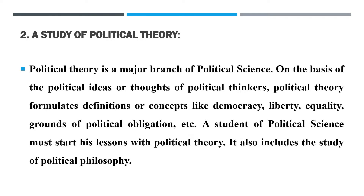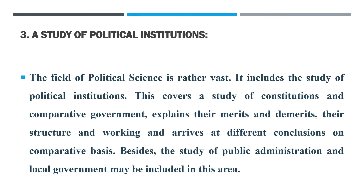Next we have the study of political institutions. The field of political science is rather vast. It includes the study of political institutions, which covers a study of constitutions and comparative government, explains their merits and demerits, their structure and working, and arrives at different conclusions on a comparative basis. Besides, the study of political administration and local government may be included in this area.